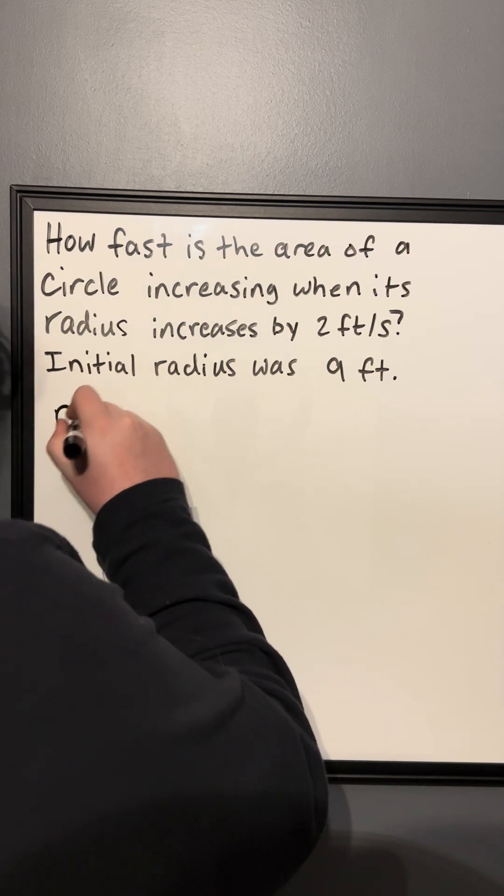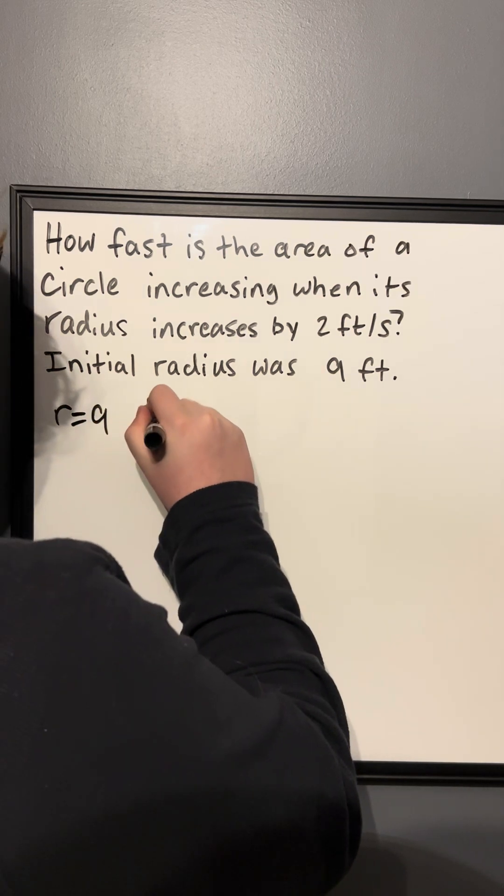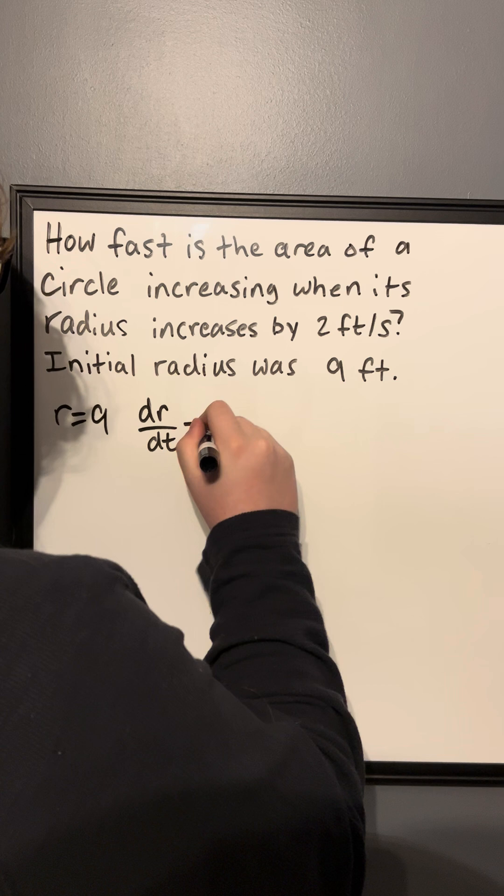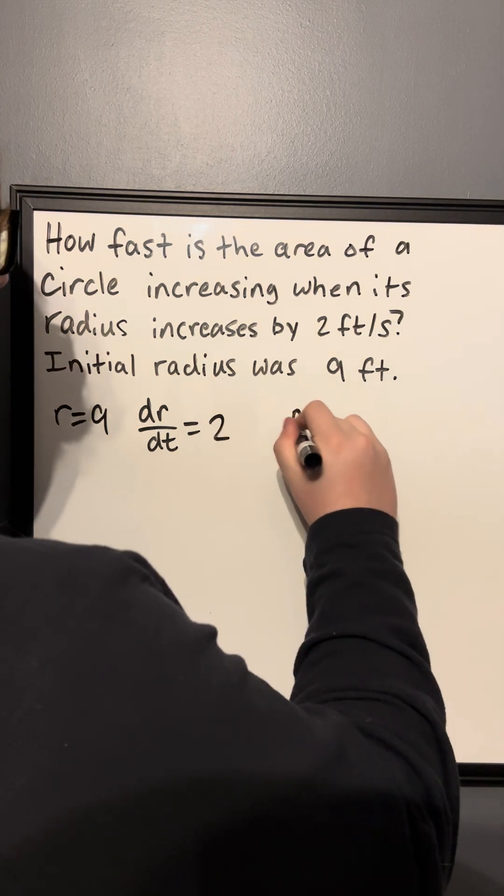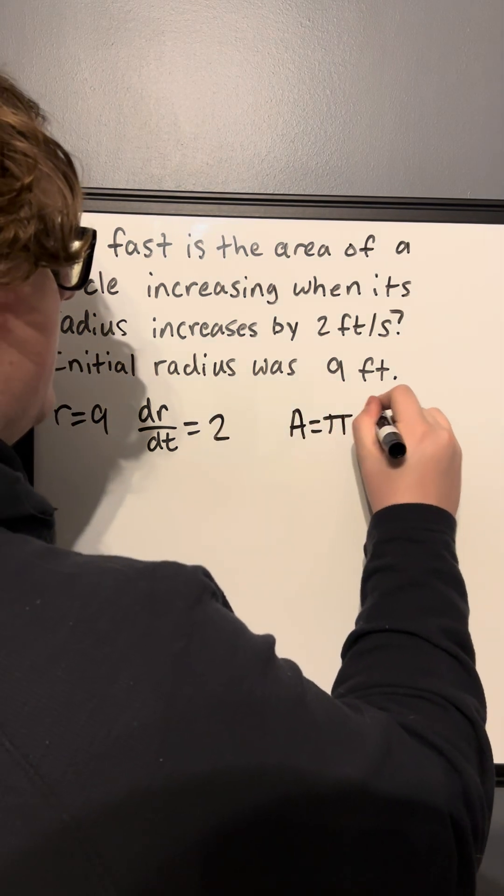So we're given the radius r equals 9. We know that the change in the radius over time is equal to 2, or 2 feet per second. We also know that the area of a circle is equal to pi times the radius squared.